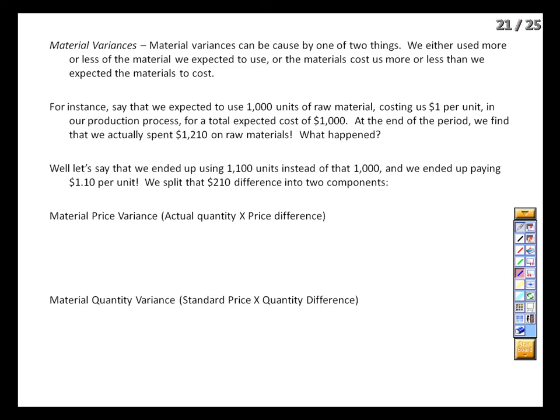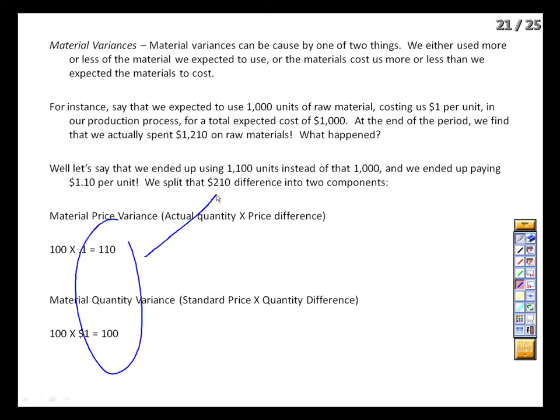This materials variance of $210 breaks into two components: quantity and price. The price variance is actual units used times the difference in price: 1,100 units × $0.10 = $110. That's the portion due to material costs being higher than expected — we investigate whether the purchasing manager made an error or there was a supply shock. The material quantity variance is the standard price ($1) times the quantity difference (100 units) = $100, representing money that would have overrun budget even if the price hadn't changed. Was there greater waste, or theft? Together these two explain the $210 difference. We follow up with both and determine whether it's a one-time event or whether we need to reset our baseline estimates — which means re-doing the budget and break-even analysis.